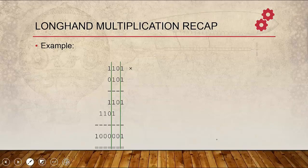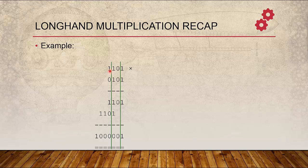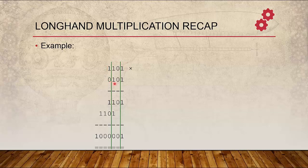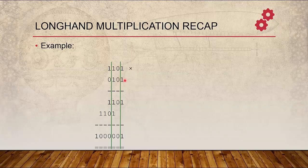Let us take one example of Multiplication with Longhand. Let us say we are multiplying 13 and 5, which is 1101 and 0101. Five is the Multiplier, 13 is the Multiplicand. We start with LSB in Multiplier. The first LSB is 1.